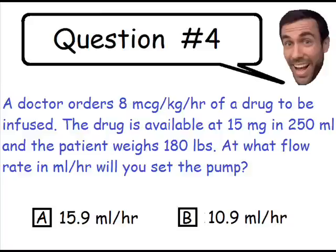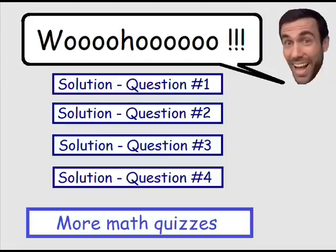Question number four: at what flow rate in milliliters per hour will you set the pump? The correct answer is B, 10.9 milliliters per hour. Here are the links to the full detailed solutions to every question of this quiz, so if you need any extra help make sure you check them out. I really hope that this helped. If you want to see more of my new videos, make sure that you subscribe to my channel. Thank you so much for watching and I will see you in my next video.